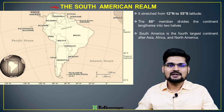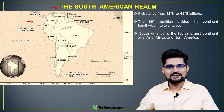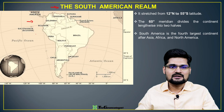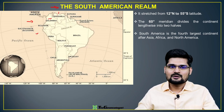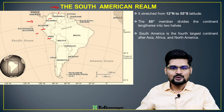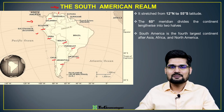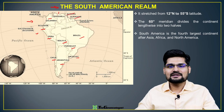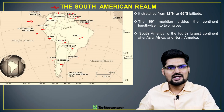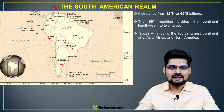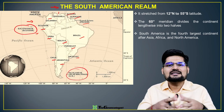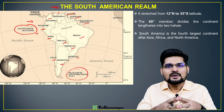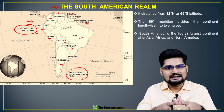When we say South American realm, the continent of South America comes into the picture, which has all these particular countries. Right from the north: Venezuela, Colombia, Ecuador, Peru, Chile, Argentina, Uruguay, Paraguay, Bolivia, Brazil, Guiana, Suriname, French Guiana, and some islands as well like Galapagos Island and Falkland Islands. These are the constituents of the South American realm.